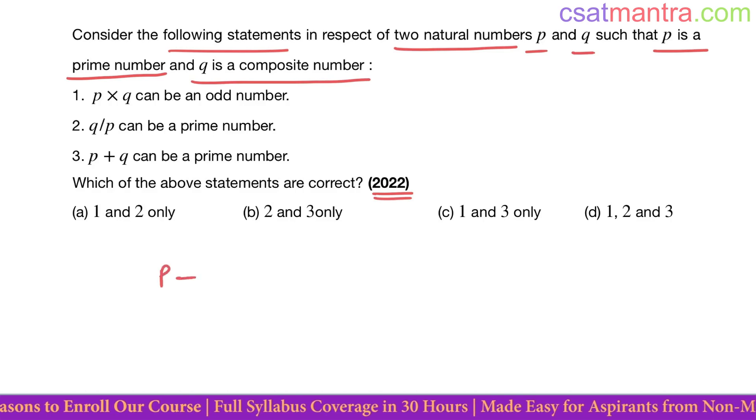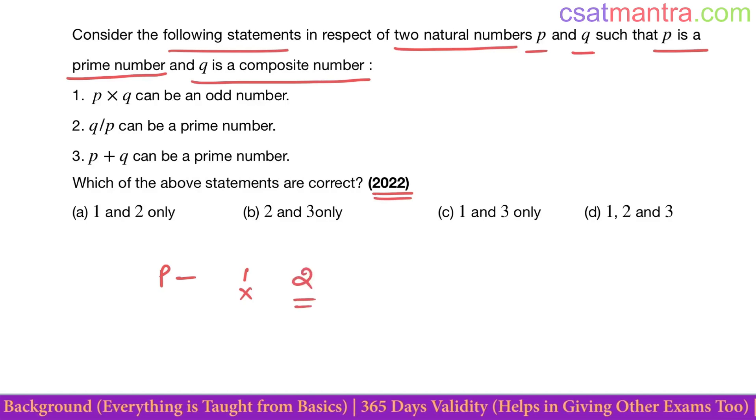Prime numbers are greater than one, divisible by themselves and one only. So one cannot be prime number because they are greater than one. The smallest prime number is two. Two is the even prime number, this is the only even prime number.